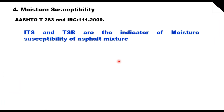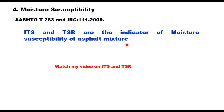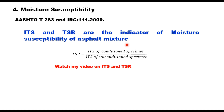Moisture susceptibility: ITS (indirect tensile strength) and tensile strength ratio (TSR) are indicators of moisture susceptibility of asphalt mixture. Six Marshall specimens are prepared at optimum binder content with average air voids of 7%, divided into two subsets. One set is conditioned and the other is tested without conditioning. Indirect tensile strength of both sets is estimated, and then TSR is calculated as ITS of conditioned specimen divided by ITS of unconditioned specimen. This TSR should be more than 80%.